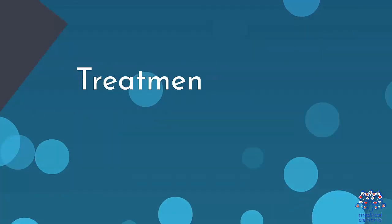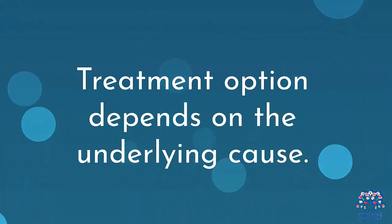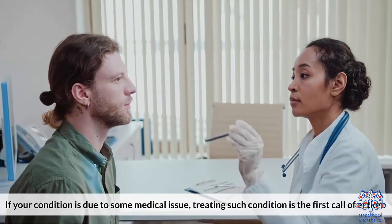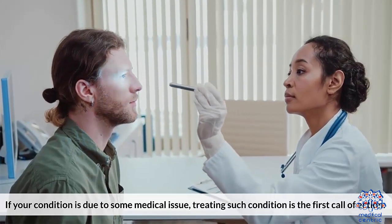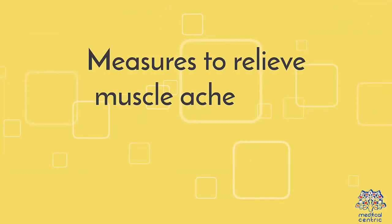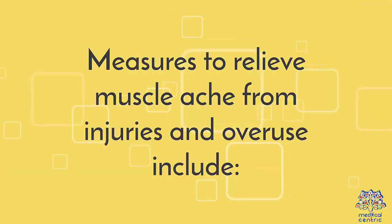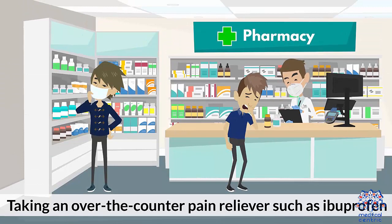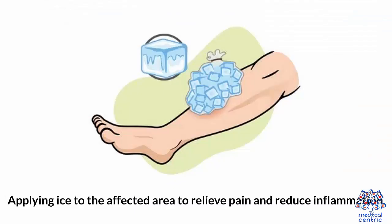Treatment. Treatment options depend on the underlying cause. If your condition is due to some medical issue, treating such condition is the first course of action. Measures to relieve muscle ache from injuries and overuse include resting the area of the body where the ache and pain is present, and taking an over-the-counter pain reliever such as ibuprofen.